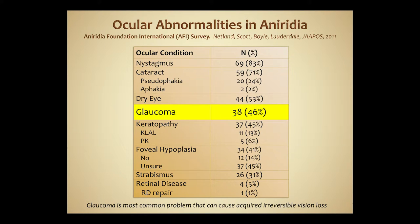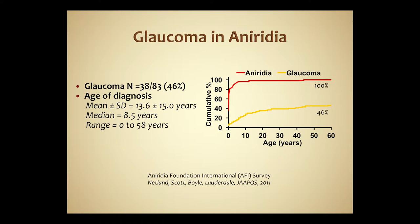There are many ocular abnormalities that occur. Glaucoma occurs in about half the patients in our published series, but is often reported at a higher rate over the lifetime of individuals. This figure shows the age of diagnosis for glaucoma in aniridia — the rate increases over the patient's lifetime, with nearly 50% developing glaucoma over time. The median age for glaucoma in this group was 8.5 years, so most children have developed glaucoma by about age eight and a half. This is important to keep in mind as we monitor patients.